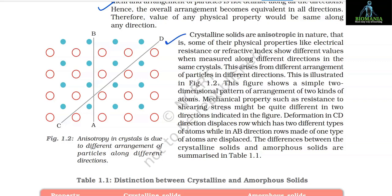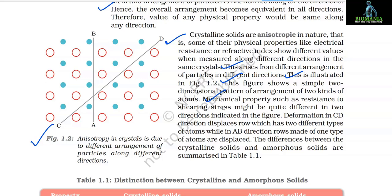Crystalline solids are anisotropic in nature — some physical properties like electrical resistance or refractive index show different values when measured along different directions in the same crystal. This arises from different arrangement of particles in different directions. For example, deformation in the C-D direction displaces rows having two different types of atoms, while in the A-B direction rows made of one type of atom are displaced.